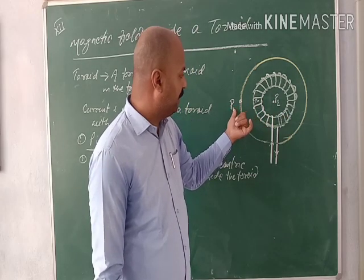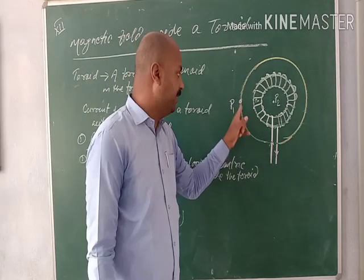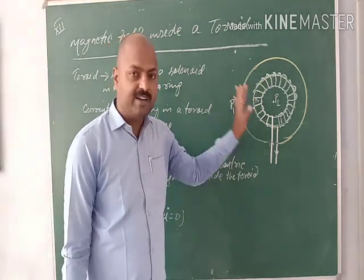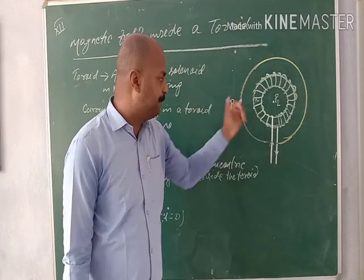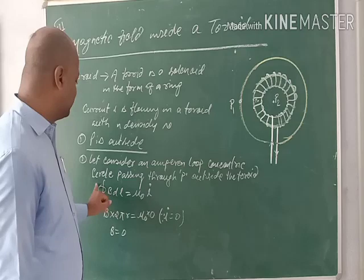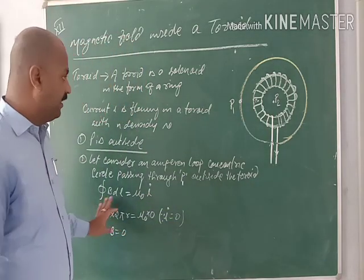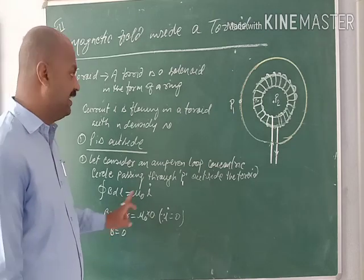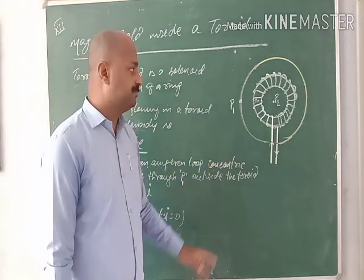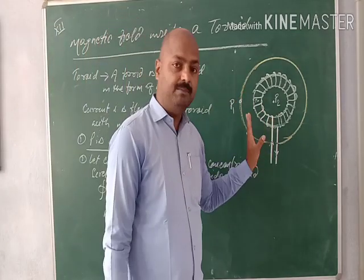First, we find the magnetic field outside the toroid at point P1. Using Ampere's circuital law, we consider an Amperian loop as a concentric circle passing through point P1 outside the toroid. The closed integral of B·dL gives B times the circumference 2πr, and since there is no net current passing through this loop, I = 0. Therefore B × 2πr = μ₀ × 0, so B = 0. Outside the toroid, the magnetic field is zero.